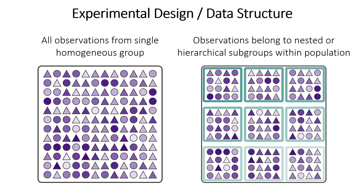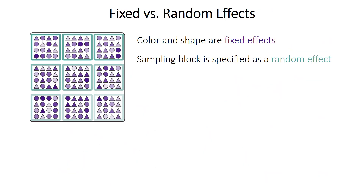But what if you have an experimental design or data structure where the observations actually belong to smaller subgroups that are nested within this bigger population? In this case, some of the variance might be explained by the subgroup that an observation is within, and considering that there might be differences between these subgroups may help you get better answers. This data structure introduces the idea of fixed versus random effects.